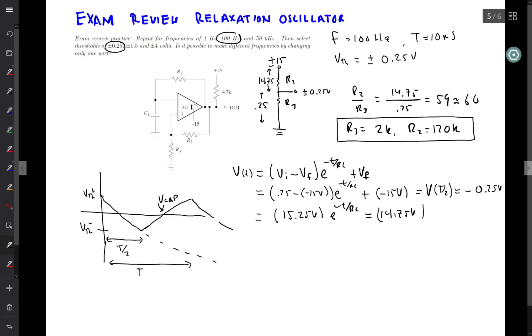So I can solve this as follows. I have 15.25 divided by 14.75 is equal to e to the plus t over 2 RC, because I've got my time there. I'm taking that to the other side of the equation. And so that means that t is equal to 2 RC times the logarithm of this ratio of 15.25 to 14.75.